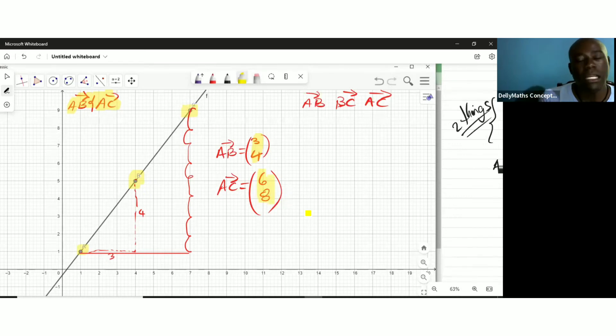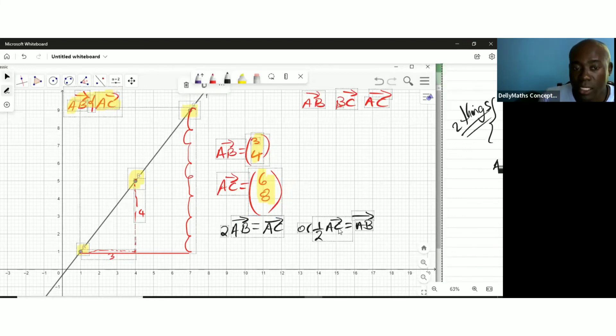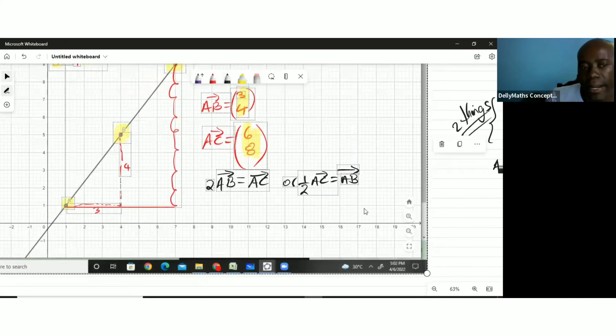Collinear is about finding two line segments from the three points and ensuring you have the vectors for them. Now you would say that two times the vector AB is the vector AC. You might have said half AC equals AB. You have more than one way to say it.